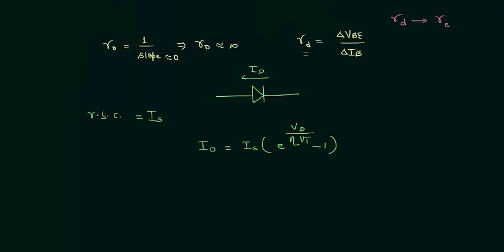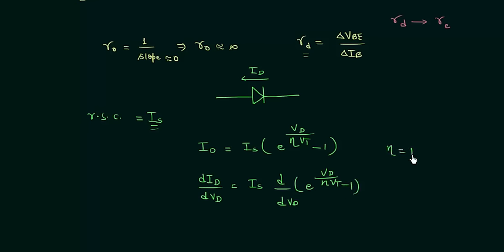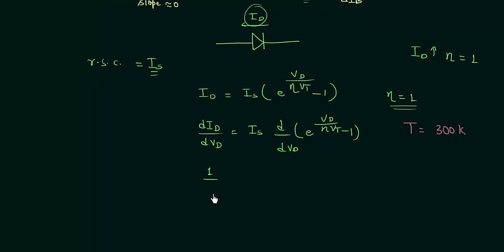To find R_D, consider a PN junction diode with diode current I_D and reverse saturation current I_S. From the diode current equation: I_D = I_S · (e^(V_D / η·V_T) − 1). Differentiating with respect to V_D, and setting η = 1 (η = 1 for germanium; η = 2 for silicon at low diode current, but η = 1 when diode current is high), and taking room temperature T = 300 K.